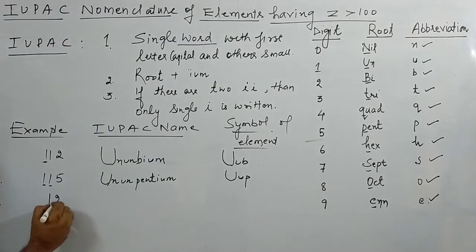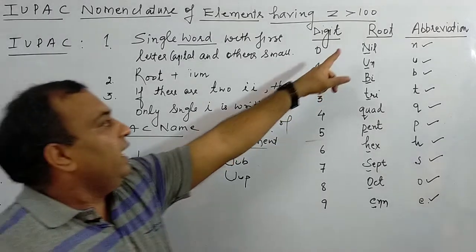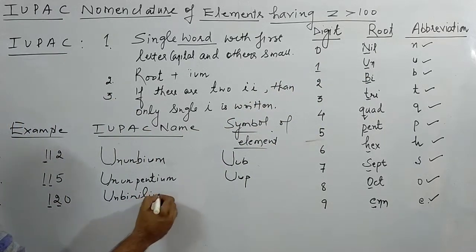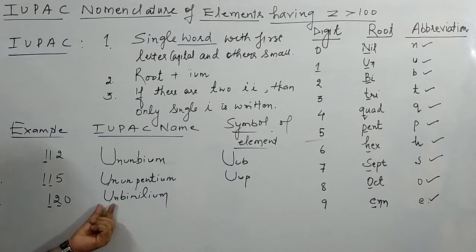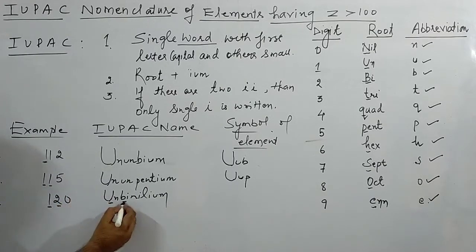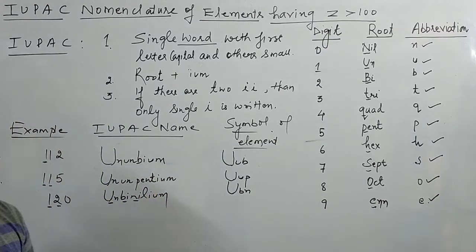Third example: atomic number 120 — digits 1, 2, 0. For 1 → un, for 2 → bi, for 0 → nil. Add IUM: un-bi-nil-ium, giving IUPAC name Unbinilium. For the symbol: un → u, bi → b, nil → n. So the symbol is Ubn.